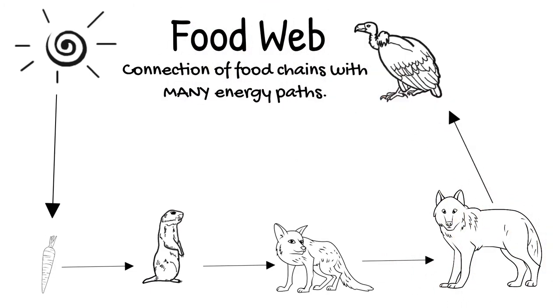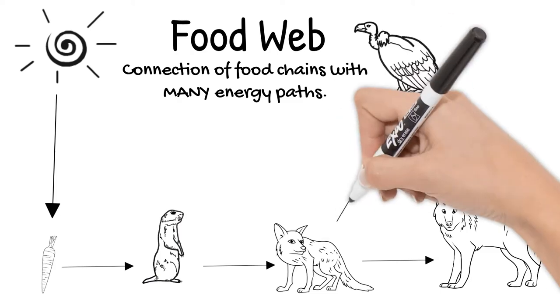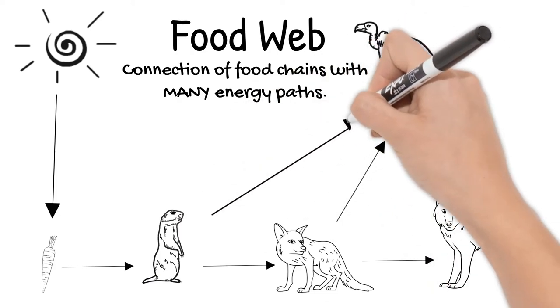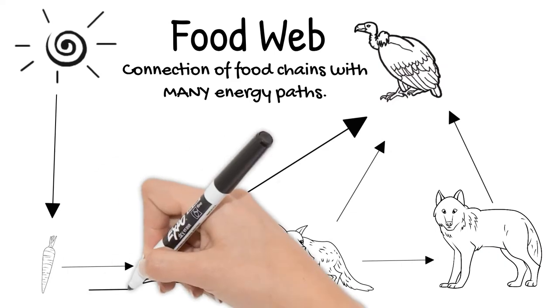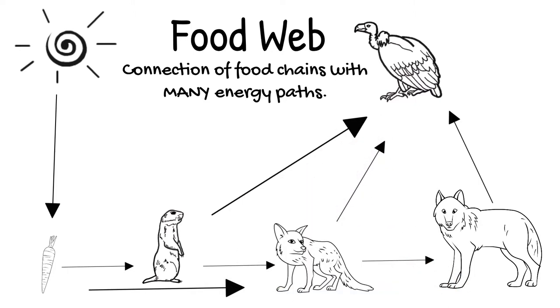Looking at our example, a vulture will eat any of these animals once they're dead to gain energy. As mentioned before, a fox is an omnivore, so it would also eat the carrot.